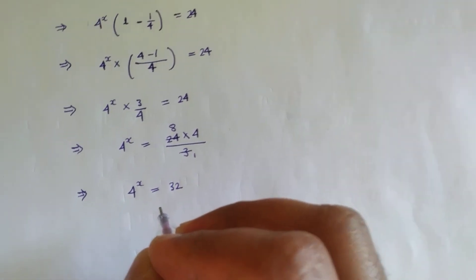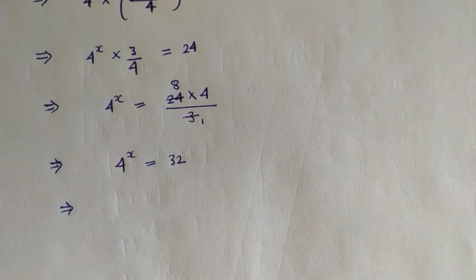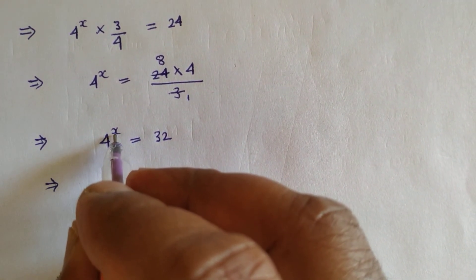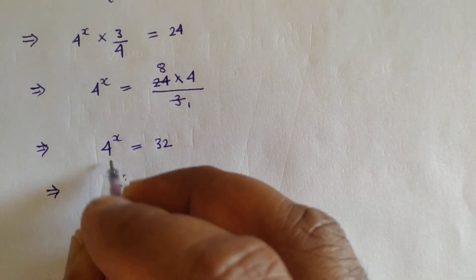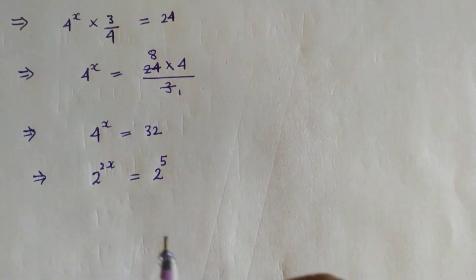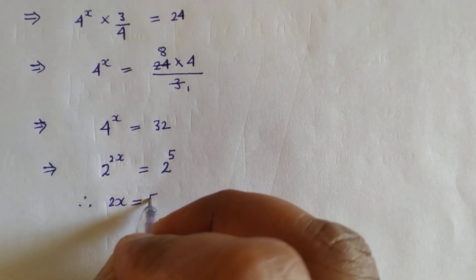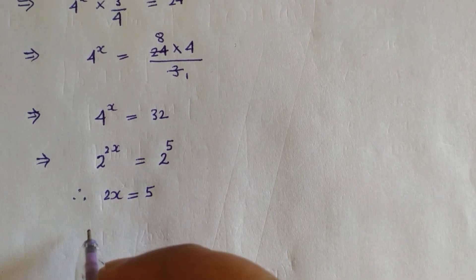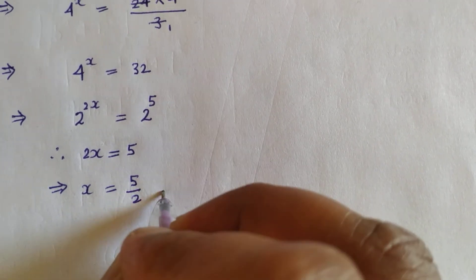That simplifies to 4^x times (4 − 1)/4 = 24, so 4^x times 3/4 = 24. Therefore 4^x = 24 × 4/3 = 32. Now rewriting: 4^x = (2^2)^x = 2^(2x), and 32 = 2^5. Since the bases are the same, 2x = 5. Therefore x = 5/2. This is the required answer.